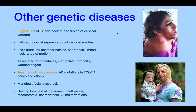Klippel-Feil syndrome is autosomal recessive — a short neck due to fusion of cervical vertebrae from failure of normal segmentation of cervical somites. The triad is: low posterior hairline, short neck, and limited neck range of motion. It's associated with deafness, cleft palate, torticollis, and webbed fingers.